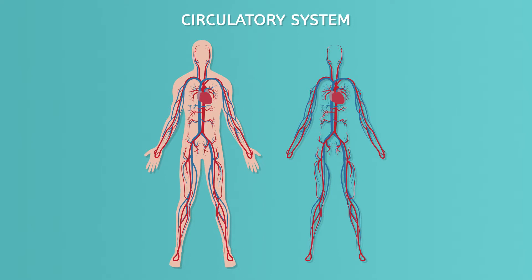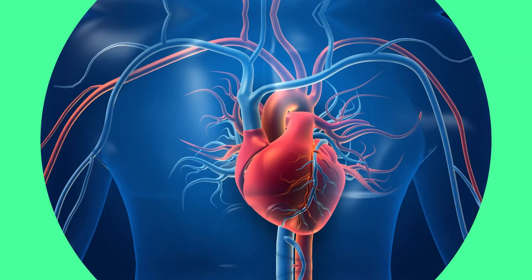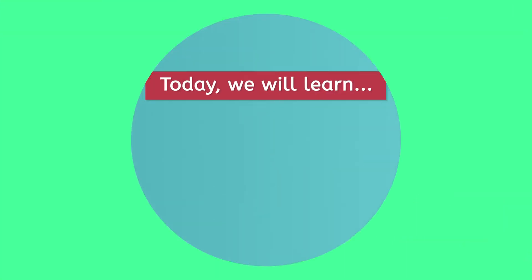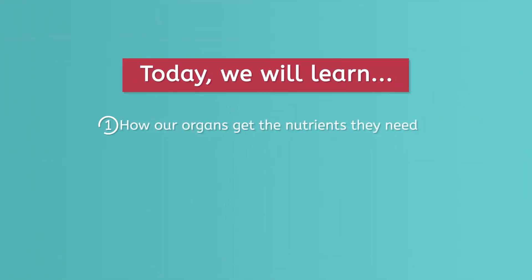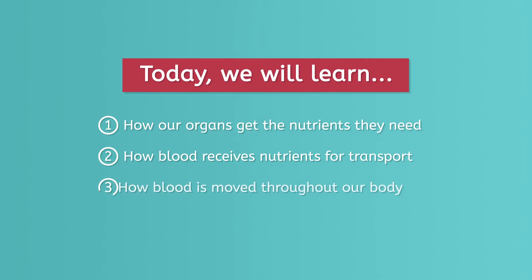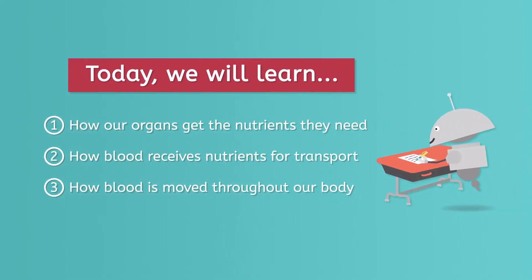In future lessons, we'll unpack other human organ systems. The circulatory or cardiovascular system includes our heart, blood vessels, and blood. Today, we will learn how our organs get the nutrients they need, how blood receives nutrients for transport, and how blood is moved throughout our body. If you're following along in your guided notes, pause this video to jot down your current best thinking about how our organs receive the nutrients they need.